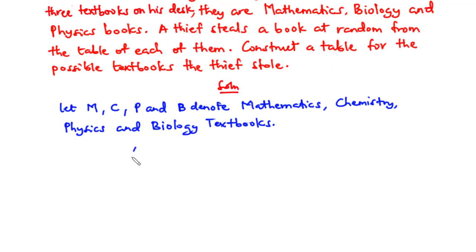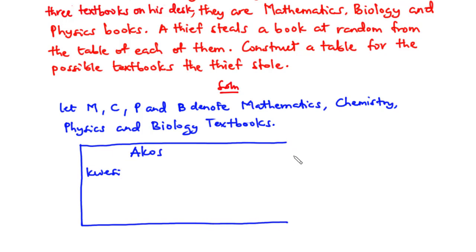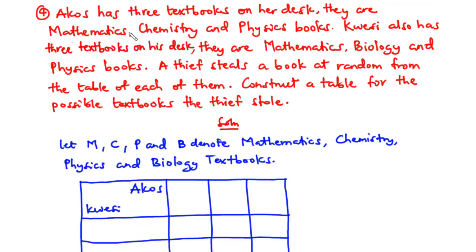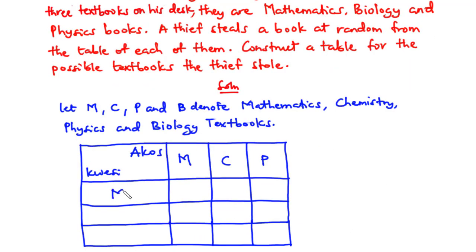So we have Akos and a second person. Akos has mathematics, chemistry, and physics books. The second person also has mathematics, chemistry, and physics books.